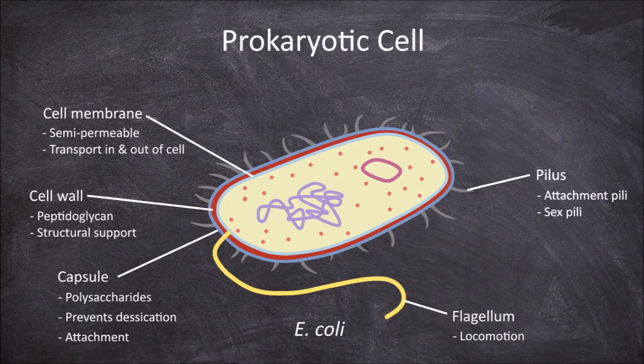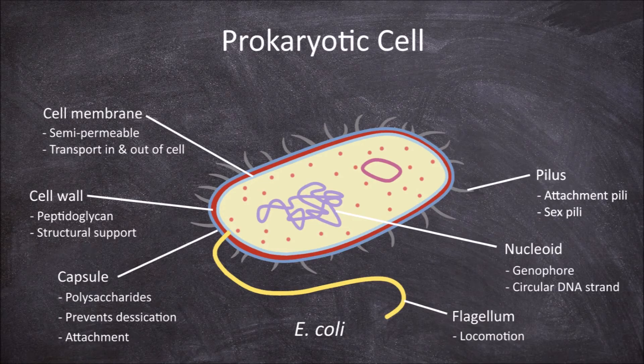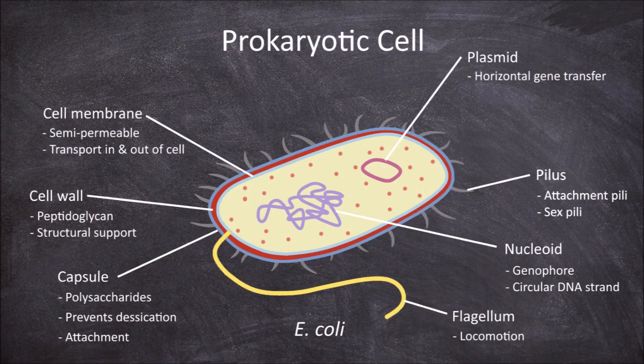Inside the cell there is the cytoplasm and the genetic material. The genetic material of the cell includes the nucleoid. The nucleoid is the region where the DNA is located in prokaryotes. It consists of the genophore, which is the circular DNA strand. Prokaryotes may also have plasmids, which are small autonomous pieces of circular DNA that are able to be transferred between bacteria in what is known as horizontal gene transfer.